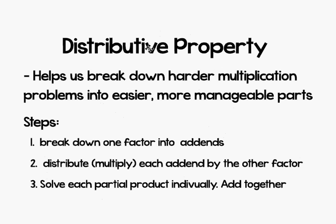To review: the distributive property helps us break down a harder multiplication problem into easier, more manageable parts. We have three basic steps. First, break down the harder factor into add-ins. Then distribute or multiply each add-in by your other factor. Solve each partial product individually, and then add them together. Good luck, and let me know if you have any questions.